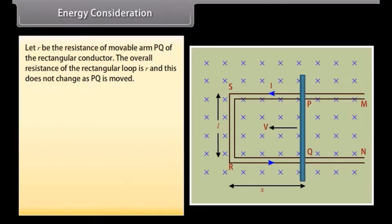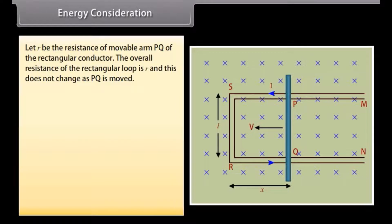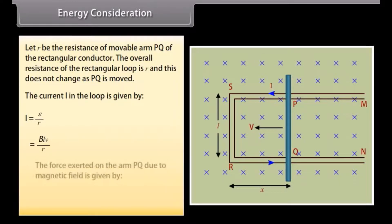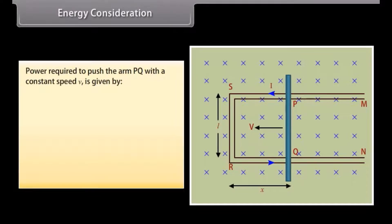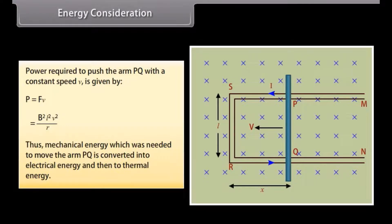Energy Consideration: Let R be the resistance of movable arm PQ of the rectangular conductor. The current I in the loop is given by E/R = BLV/R. The force exerted on arm PQ due to the magnetic field is given by ILB = B²L²V/R. Power required to push the arm PQ with a constant speed V is given by B²L²V²/R. Thus, mechanical energy needed to move the arm PQ is converted into electrical energy and then to thermal energy.